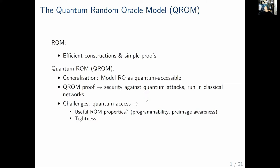While this is very neat because it allows us to argue post-quantum security, it comes with its own challenges. Quantum access, meaning superposition queries, adds proof complexity, and very useful random oracle properties like programmability and pre-image awareness are not trivially known to generalize to this new scenario. The bounds we can derive by quantum random oracle arguments are usually less tight than their classical counterparts.